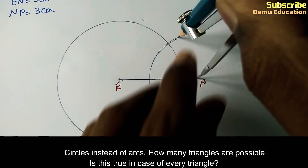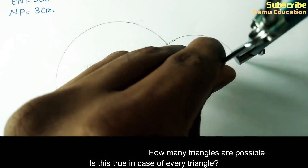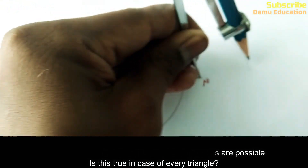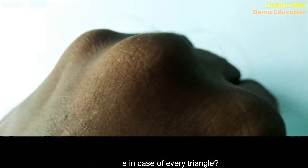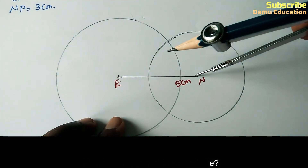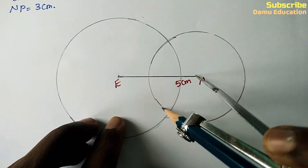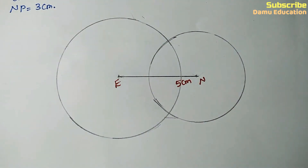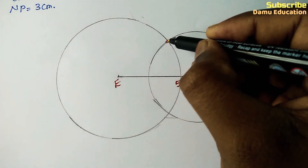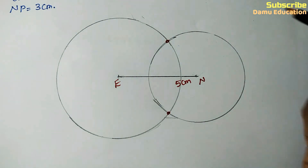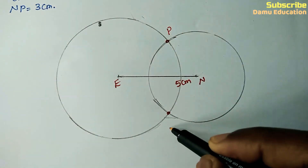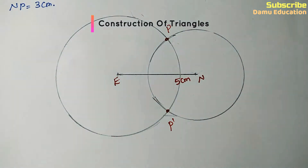With radius 3 centimeter, where the two circles intersect, mark those two intersection points as P and P dash.